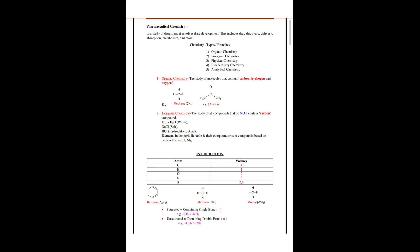An example is water, with molecular formula H2O. Then NaCl — salt — contains one molecule of sodium (Na) and one molecule of chlorine (Cl). Then HCl is hydrochloric acid. Inorganic chemistry covers elements in the periodic table and their compounds, except compounds based on carbon.